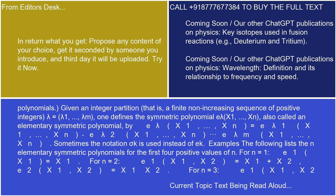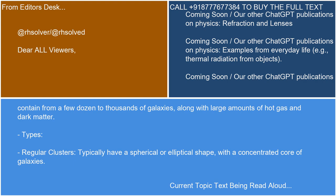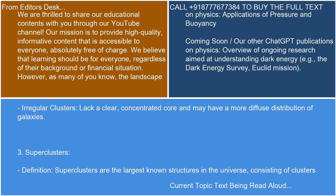2. Galaxy clusters. Definition: Galaxy clusters are collections of galaxies held together by gravity. They can contain from a few dozen to thousands of galaxies, along with large amounts of hot gas and dark matter. Types: Regular clusters typically have a spherical or elliptical shape with a concentrated core of galaxies. Irregular clusters lack a clear concentrated core and may have a more diffuse distribution of galaxies.